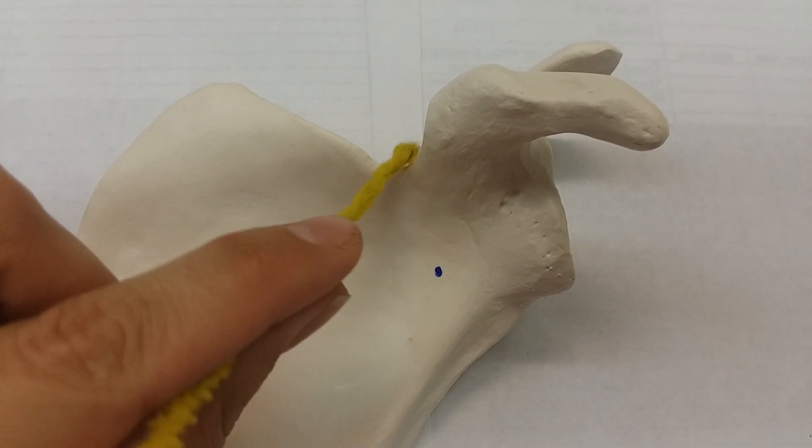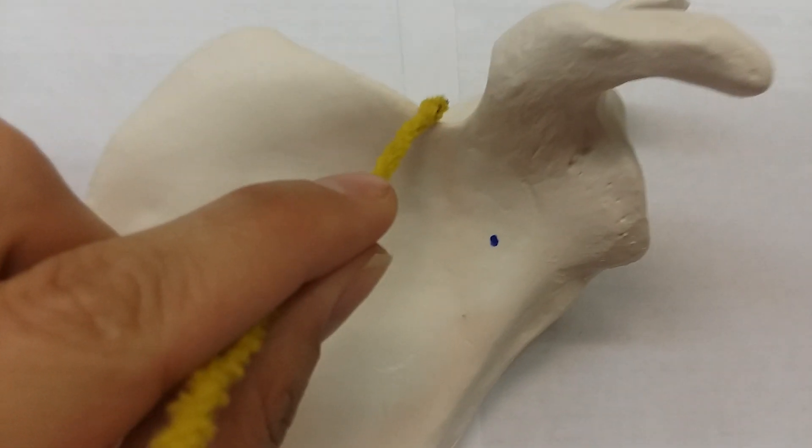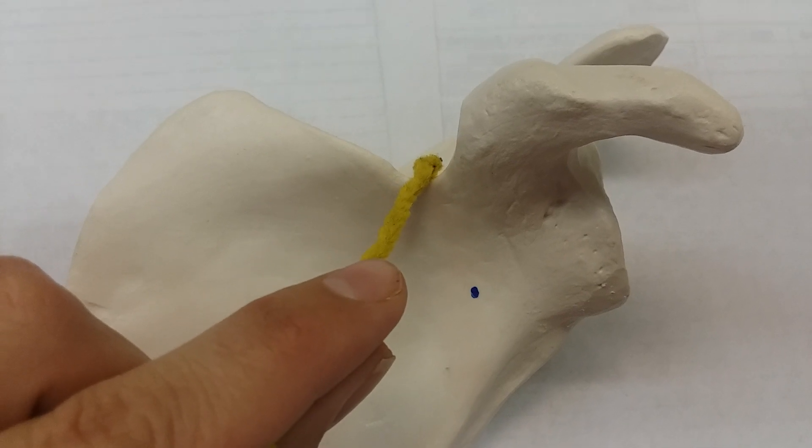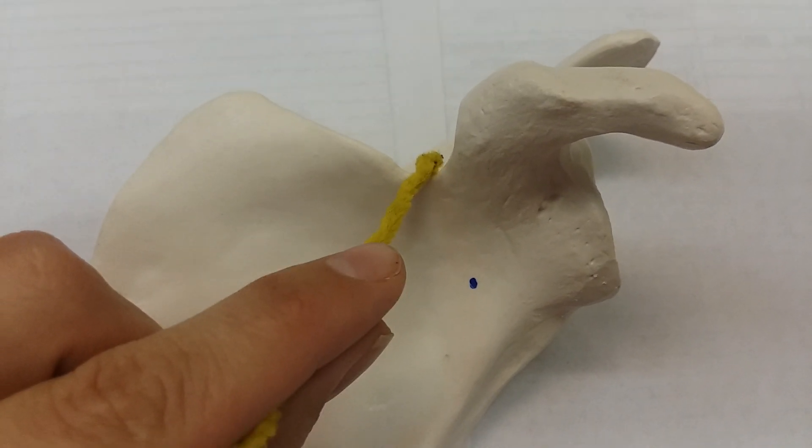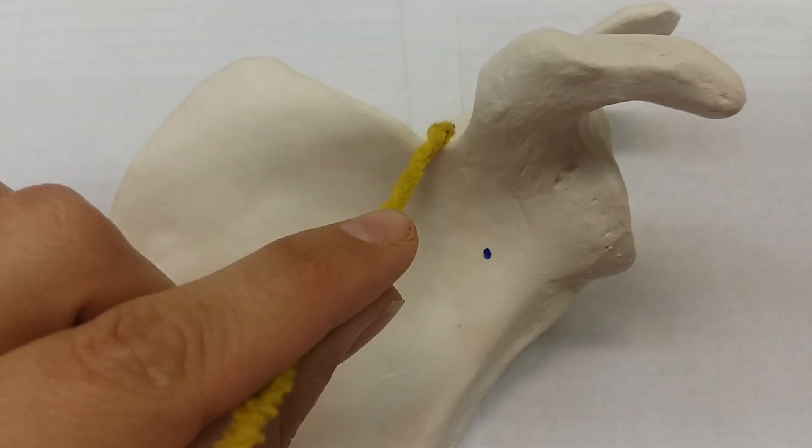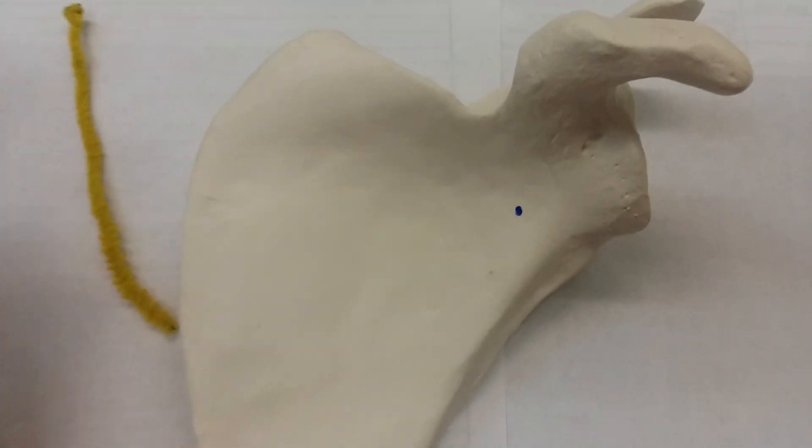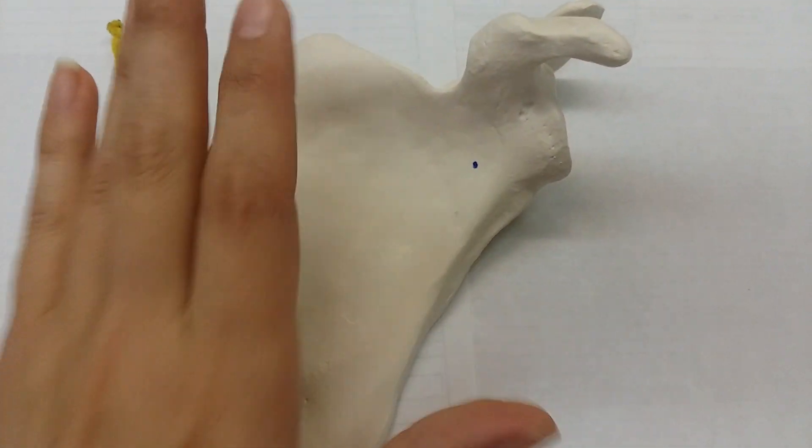This is going to be the scapular notch. It's not as detailed as it is on less budget-friendly models, but we're going to have our infraspinous fossa, that's going to require going to the posterior side.